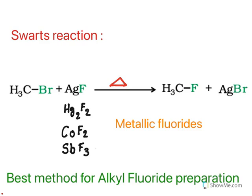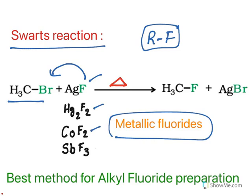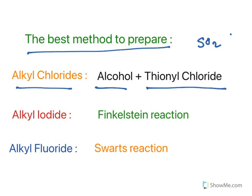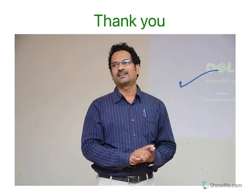The other halogen exchange reaction is the Swartz reaction, the best method to prepare alkyl fluorides. Alkyl halides are treated with metallic fluorides such as silver fluoride, mercuric fluoride, cobalt fluoride, or antimony fluoride on heating to give alkyl fluoride and the corresponding metal halide. Summary: the best method for alkyl chlorides is alcohol with thionyl chloride, as HCl and SO₂ byproducts are gases leaving pure alkyl chloride; alkyl iodides are prepared by Finkelstein reaction; alkyl fluorides by Swartz reaction. In the next video I will explain preparation of haloarenes.